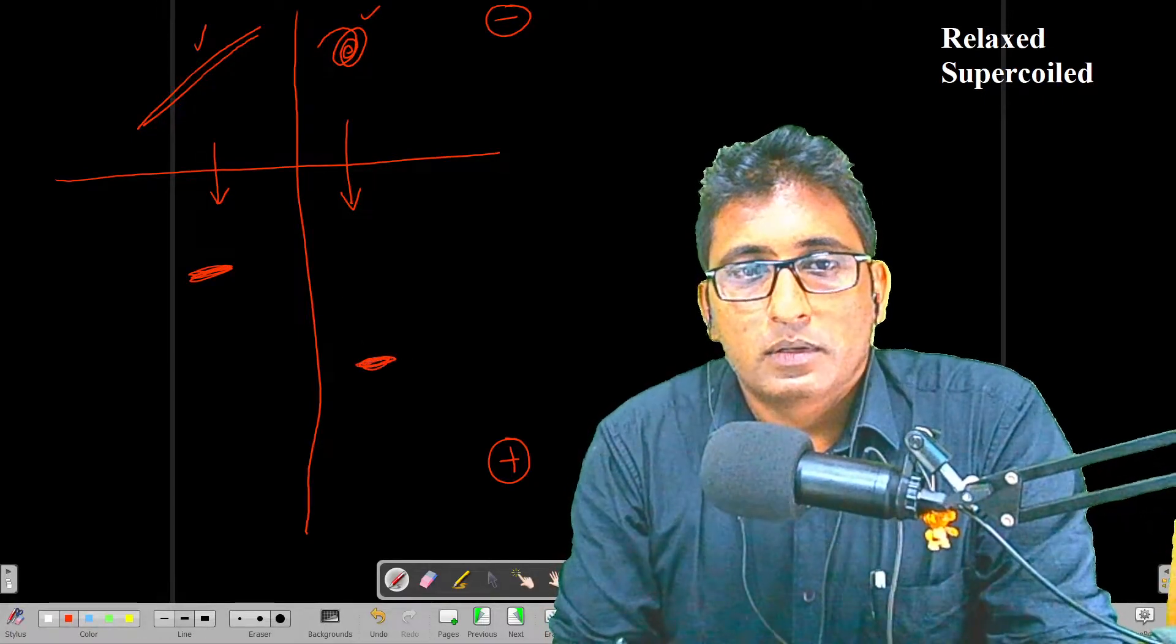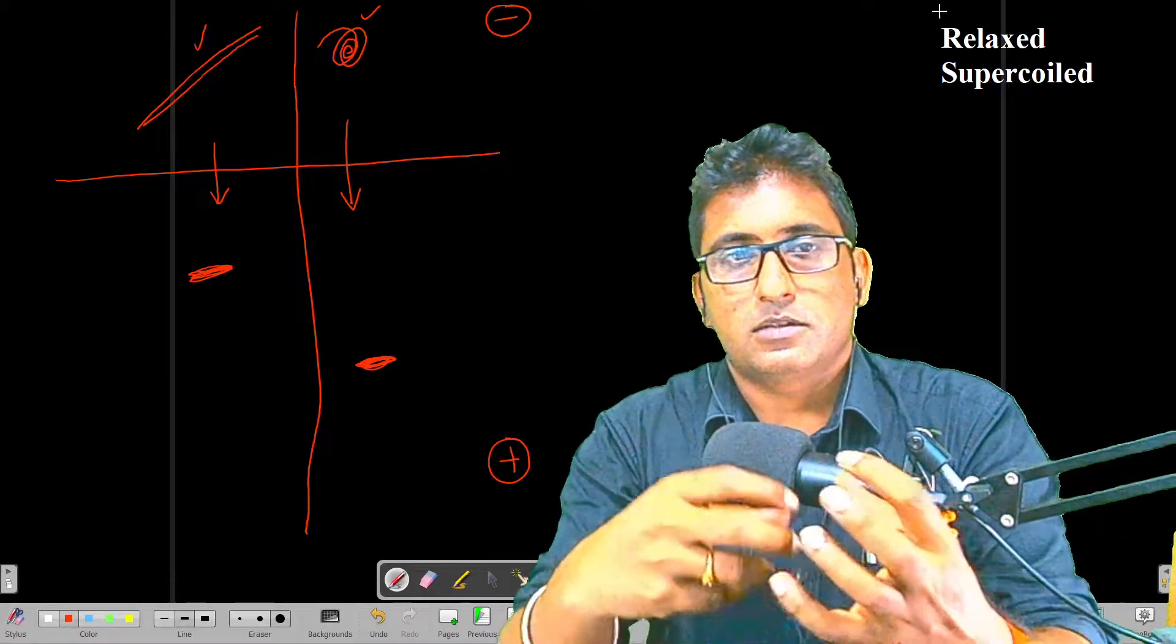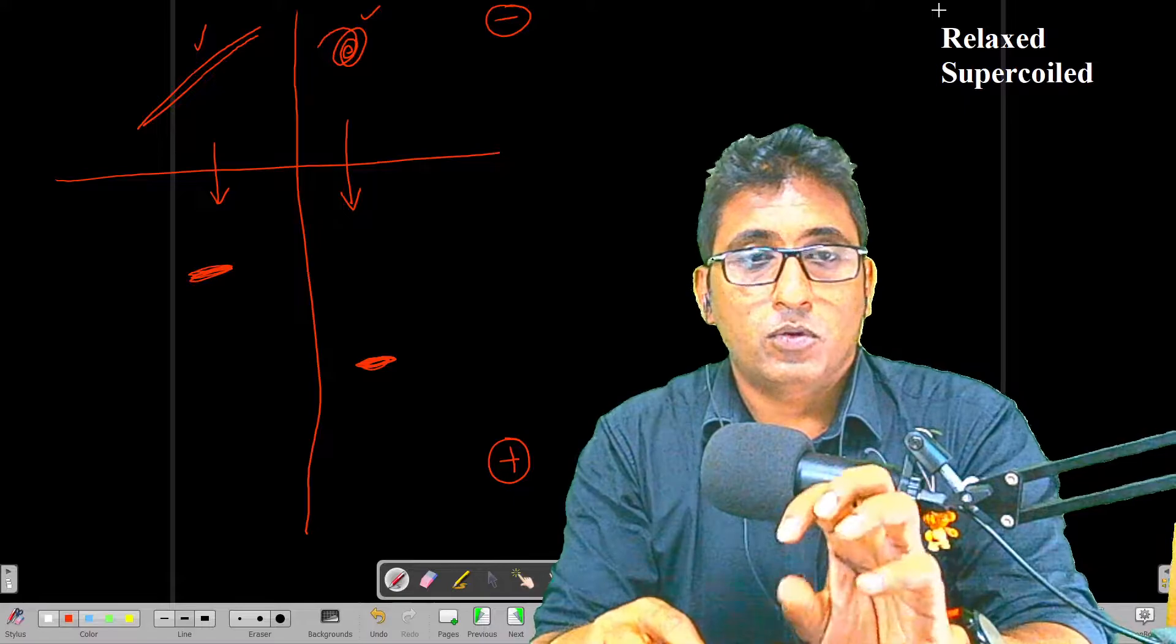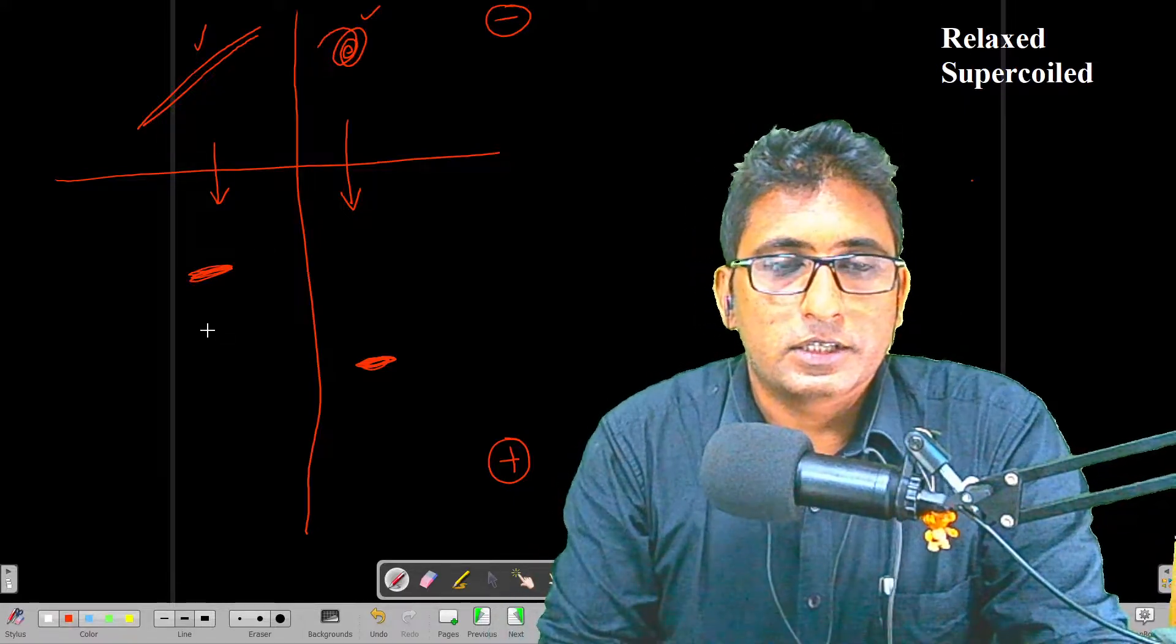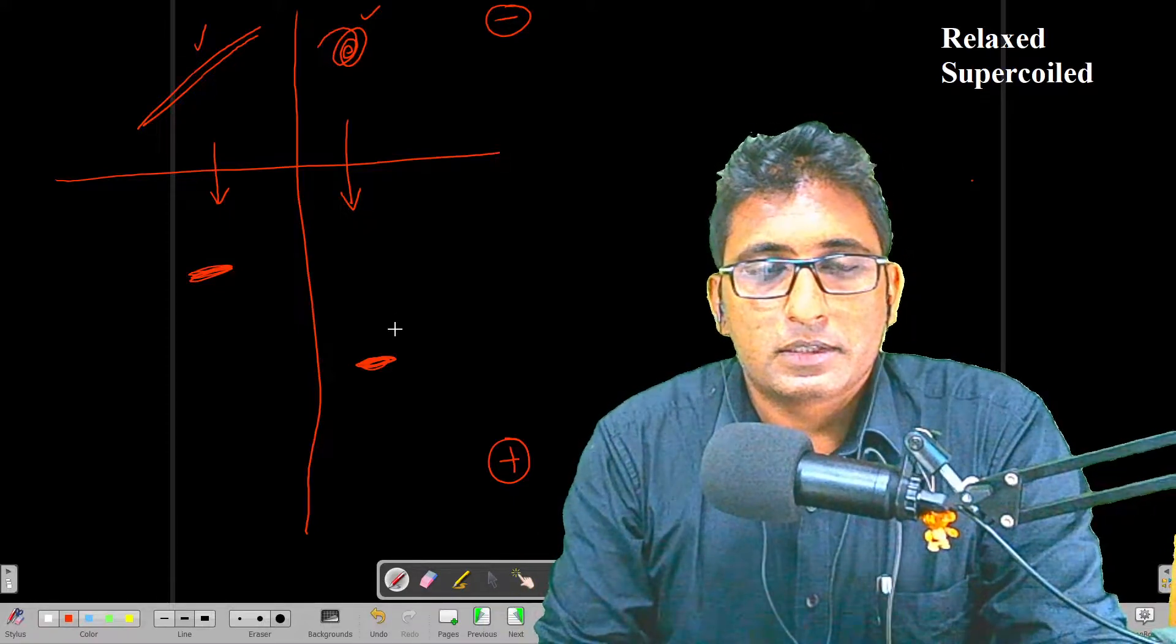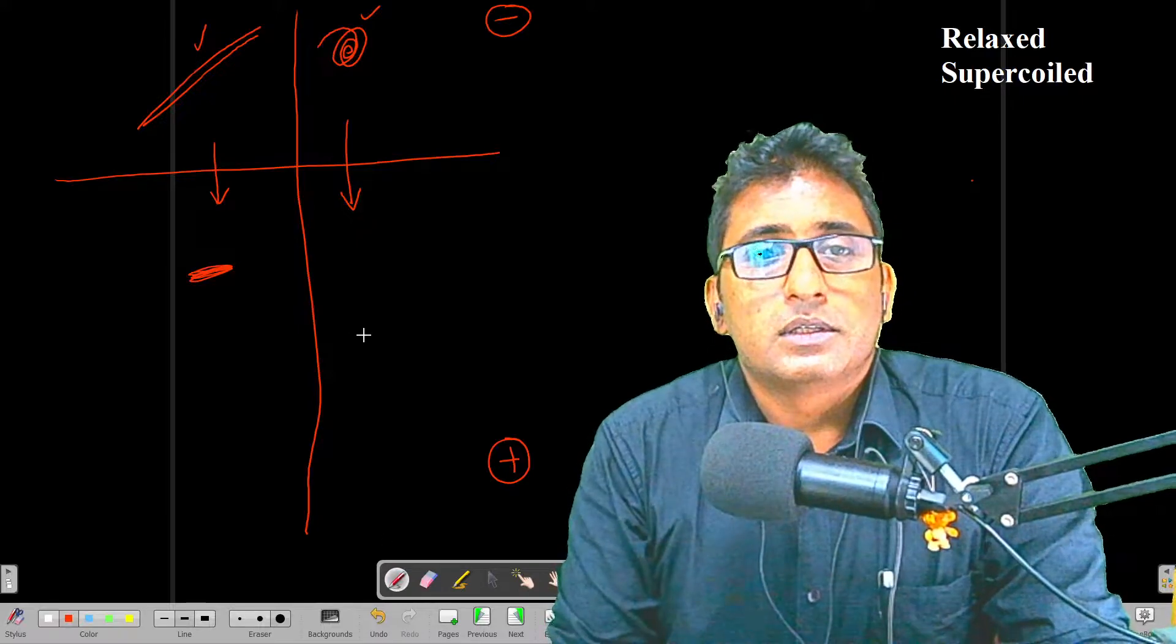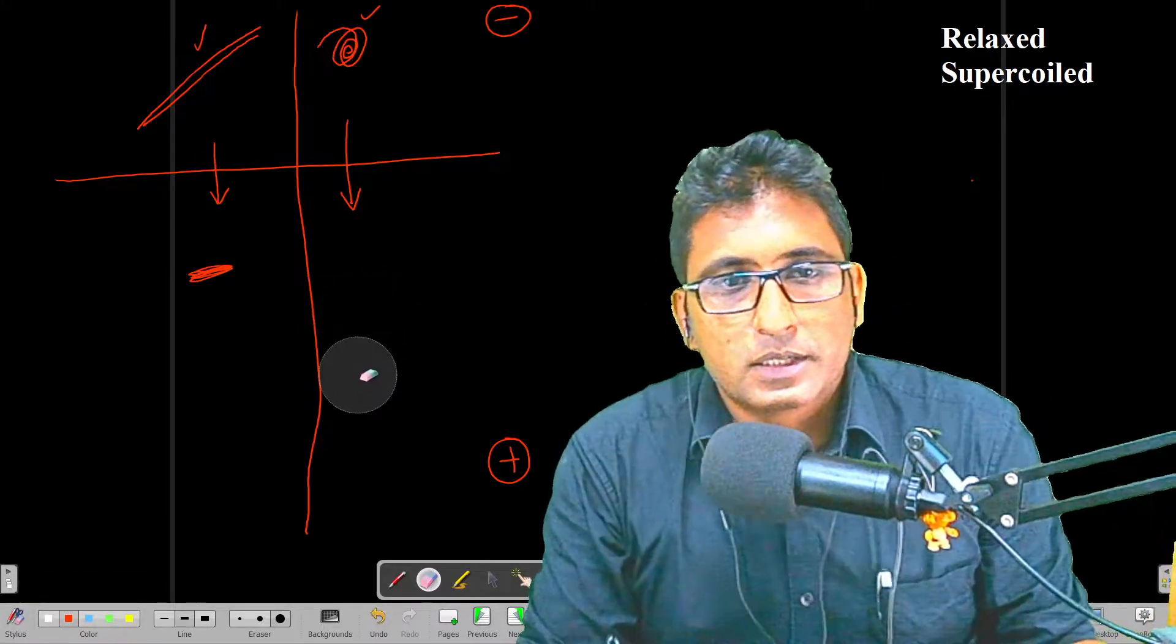If electrophoresis is conducted, then we would notice that the relaxed one travels little slower compared to that of the supercoiled one. The supercoiled one is much more compact because of these writhes, and therefore it will pass through the agarose, the pores in the agarose, very easily compared to that of the linear DNA. Therefore, there too, we will find that the supercoiling of the DNA is important.